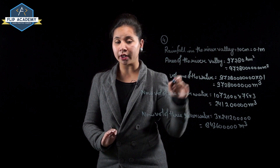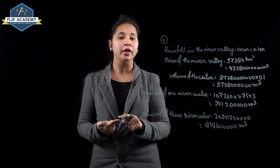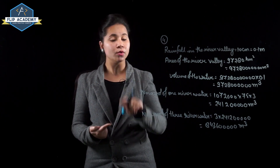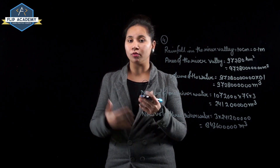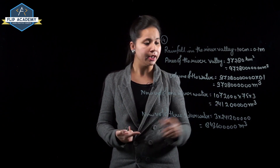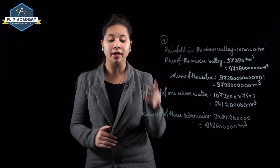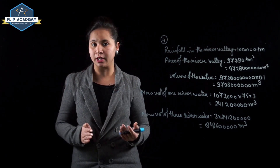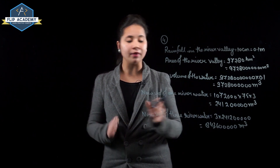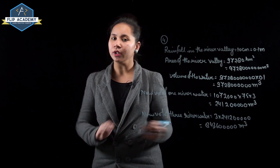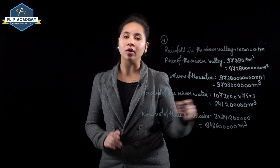Volume of one river = length × breadth × depth = 1072 km × 75 m × 3 m. Converting: volume of one river ≈ 2,41,20,000 m³ (approximately). Volume of three rivers = 3 × that value ≈ 7,23,60,000 m³. This is approximately equal to the volume of rainfall water, confirming the statement.